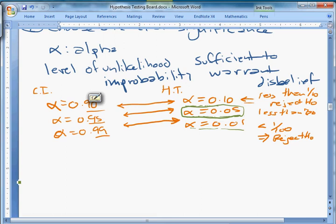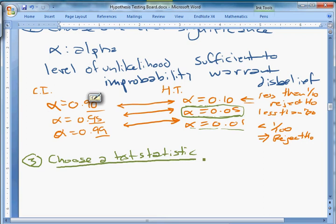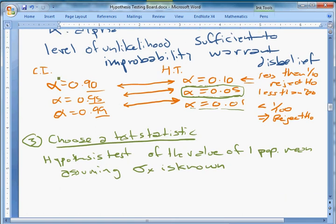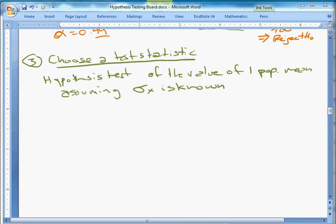Step three is choosing a test statistic. Now this is going to depend very much on your question that you're asking. There are lots of test statistics that exist. For now, what we're doing is we're going to begin with a hypothesis test of the value of one mean, one population mean, assuming we know the standard deviation of the population. So we're assuming sigma_x is known. Is it really known? Probably not, and we'll relax that assumption in a little bit. But for now, we're going to assume we know it.